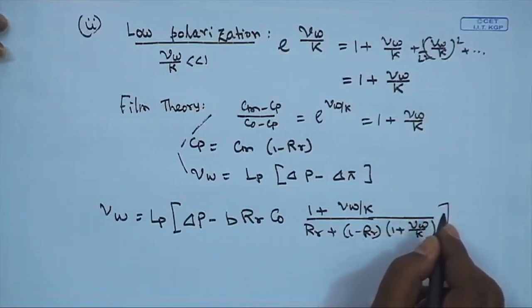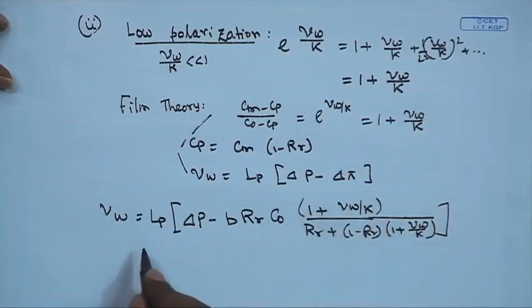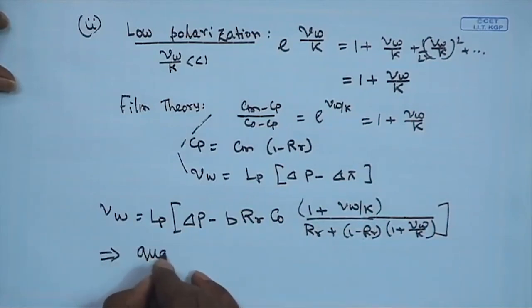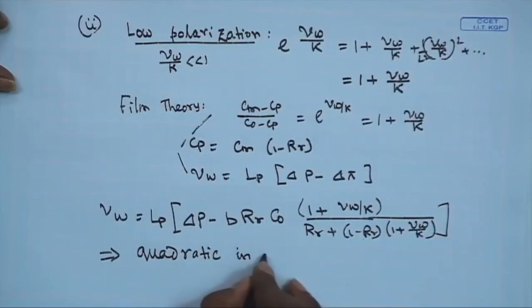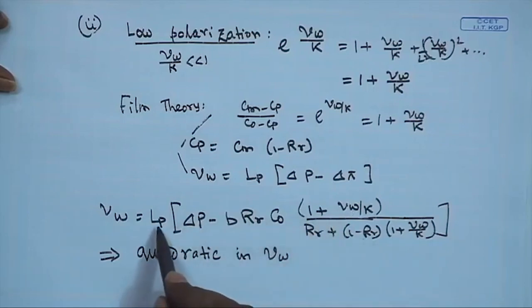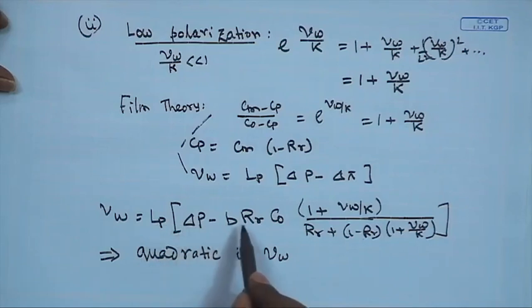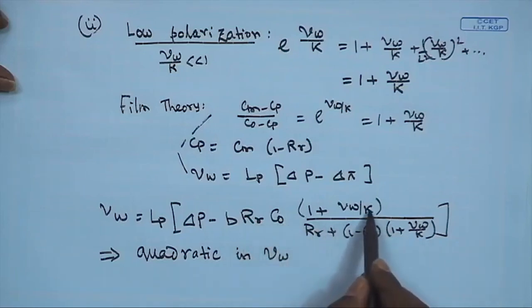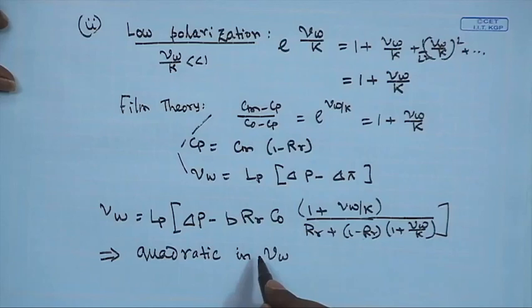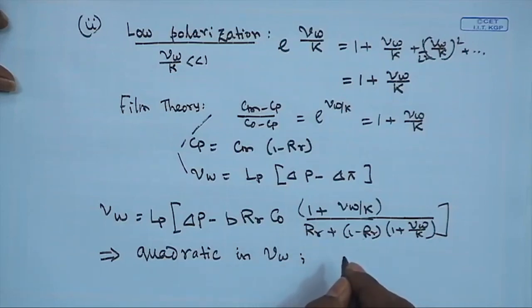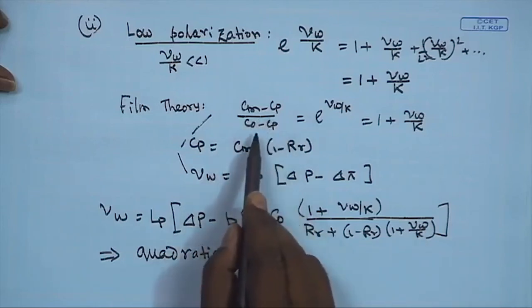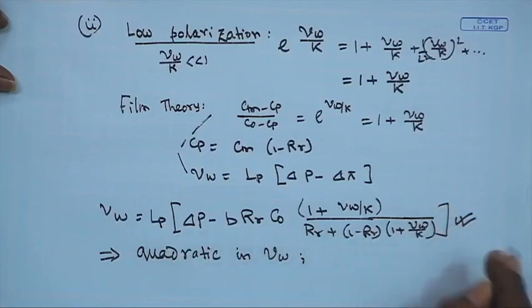Combining these equations results in a quadratic in V_w. All other quantities — L_p (membrane permeability), delta_p (transmembrane pressure drop), B (osmotic coefficient), R_r (real retention), C_naught (feed concentration), and k (mass transfer coefficient) — are known or calculable. We can therefore solve for V_w and directly estimate C_m, since (C_m minus C_p) divided by (C_naught minus C_p) can be expressed explicitly.